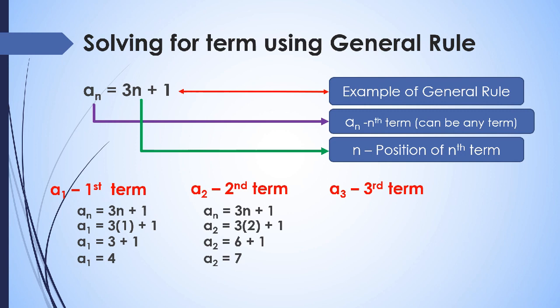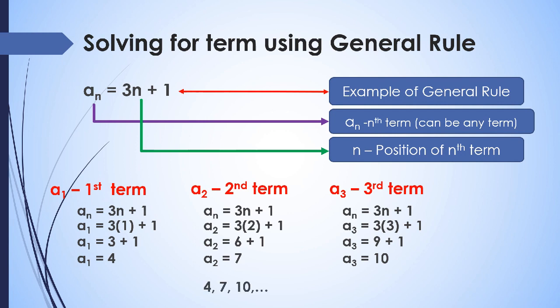For the third term, a sub 3, we use a sub n equals 3n plus 1, replacing n with 3. So a sub 3 equals 3 times 3 plus 1, which gives 9 plus 1, so a sub 3 equals 10. Therefore, the first three terms of the sequence a sub n equals 3n plus 1 are 4, 7, and 10.